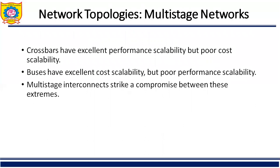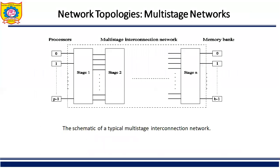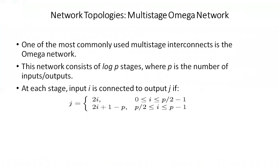The drawback of the crossbar switch can be overcome using another topology: the omega multi-stage network. Crossbars have excellent performance scalability but poor cost scalability, while buses have excellent cost scalability but poor performance scalability. Combining the good properties of both, we form a multi-stage interconnection network that strikes a compromise between bus and crossbar. This multi-stage network connects processors to memory banks through stage 1, stage 2, up to stage n.